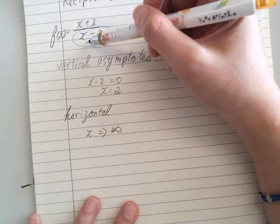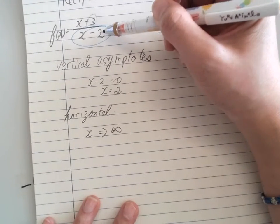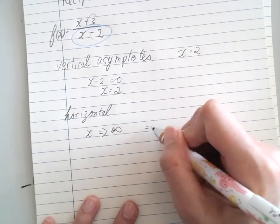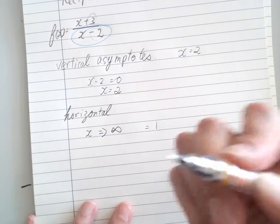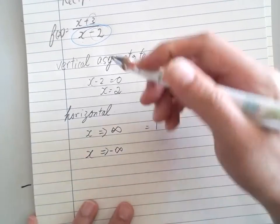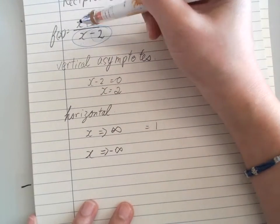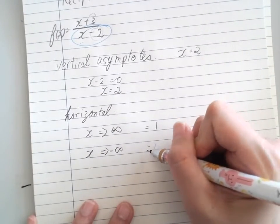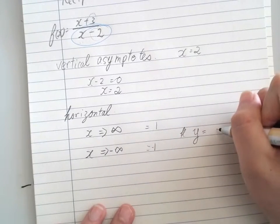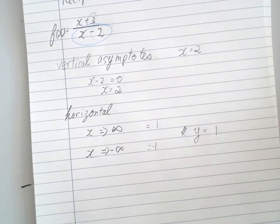So it will be cancelled out and we get 1. Think about if it's a very small number, it will become negative. The horizontal asymptote will be y=1.